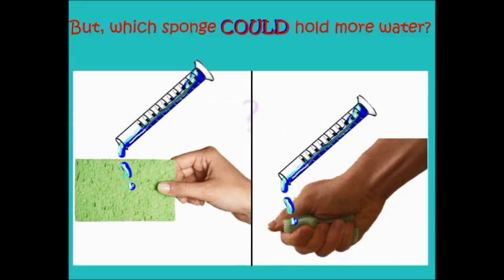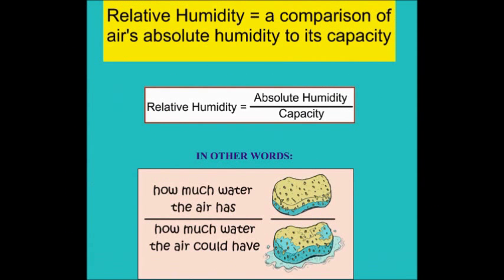But which sponge could hold more water? The one on the left that's open or the one on the right that's squeezed? Relative humidity is a comparison of air's absolute humidity to its capacity, and that is expressed as a fraction as absolute humidity divided by capacity.